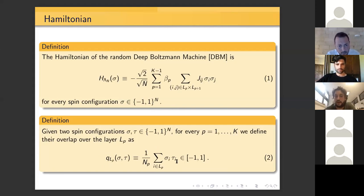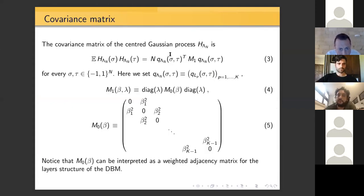The covariance matrix of the Gaussian process with the Hamiltonian - you can think of the Hamiltonian as a Gaussian process - is basically a quadratic form. It's N times, so it's extensive in the volume, which is a good thing, times this object of order one. This is a quadratic form built up by defining a vector of the overlap, which basically each component is the overlap associated to the p-th layer. The quadratic form is associated with this matrix M_β(λ), and M_β(λ) is defined this way, where λ is the vector of relative densities and the matrix M_0 is this one.